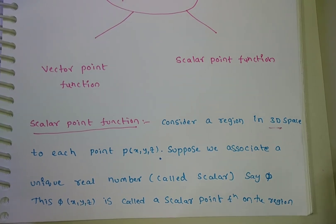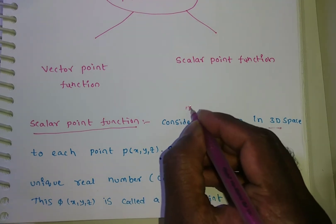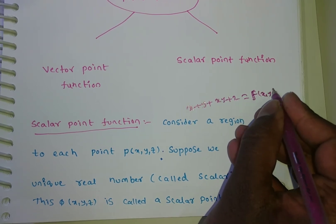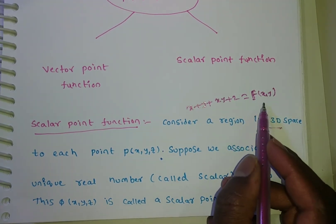For example, phi of x, y, z equals 2x plus 2y plus 2z — is there any vector? No. So simply two times of x plus y plus z. One more example: phi of x, y, z equals x-squared times y times z, in three dimensions. Suppose f equals xy plus x plus y plus 2 — there is no z element, so f of x, y, or phi of x, y equals x plus y plus xy plus 2. This is also a scalar point function only, and it is in two-dimensional space.